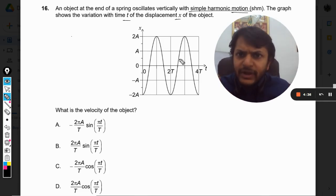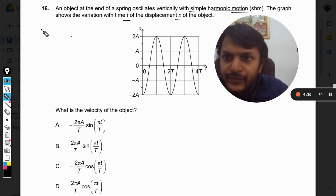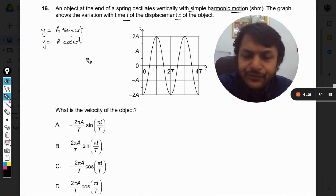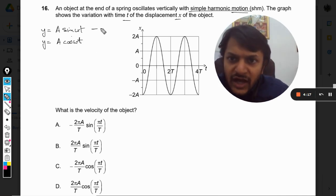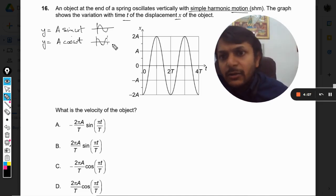First of all, there are only two equations that can define simple harmonic motion: y equals A sin omega t, and the second equation is y equals A cos omega t. The graph of sin will be somewhat like this, and the graph of cos will be like this for one complete cycle. But this graph is different.